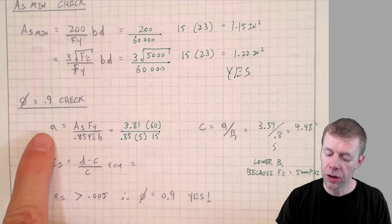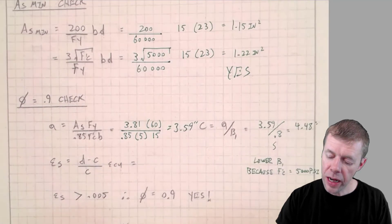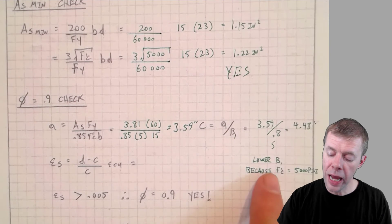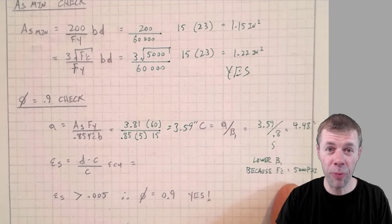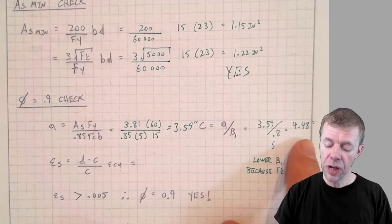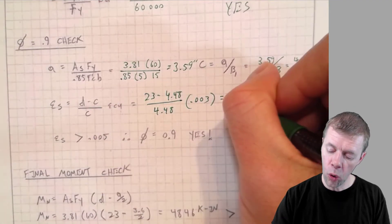Then I have my phi check. So I calculated my A. Then I calculate my C. I used a beta 1, a 0.8, because I'm using a F'C of 5,000 psi. I get 4.48 inches. I get to now solve for the strain in my steel. 0.012, which is greater than 0.005.